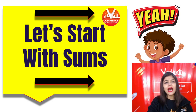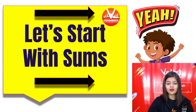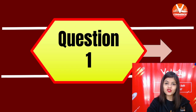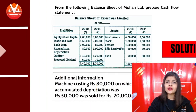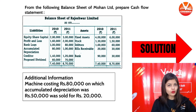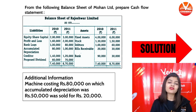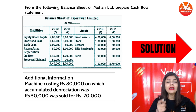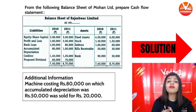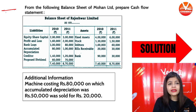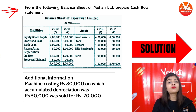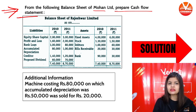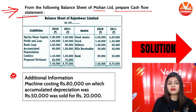Now we will solve some questions and I will tell you how to start a Cash Flow Statement question. Our first question is on screen. As we all know, the Cash Flow Statement is divided into 3 activities: cash flow from operating activity, investing activity, and financing activity. The question says: from the following balance sheet of Mohan Limited, prepare the Cash Flow Statement. There is also important additional information given.